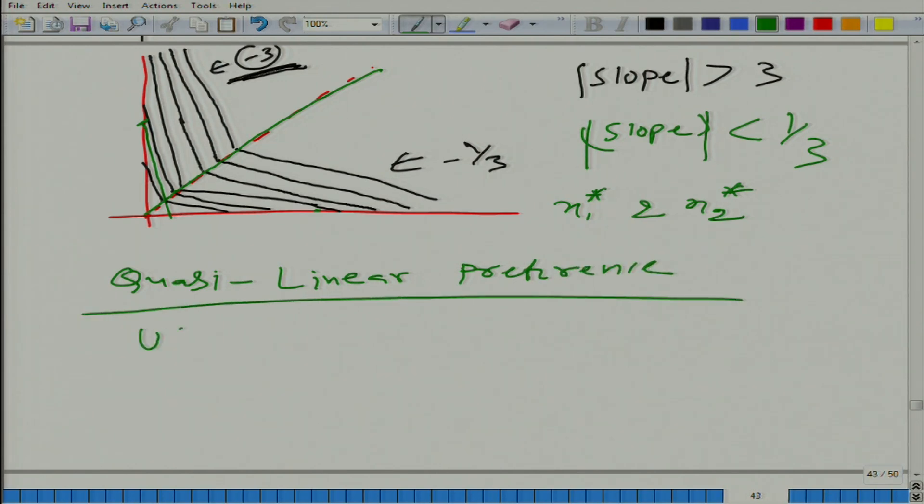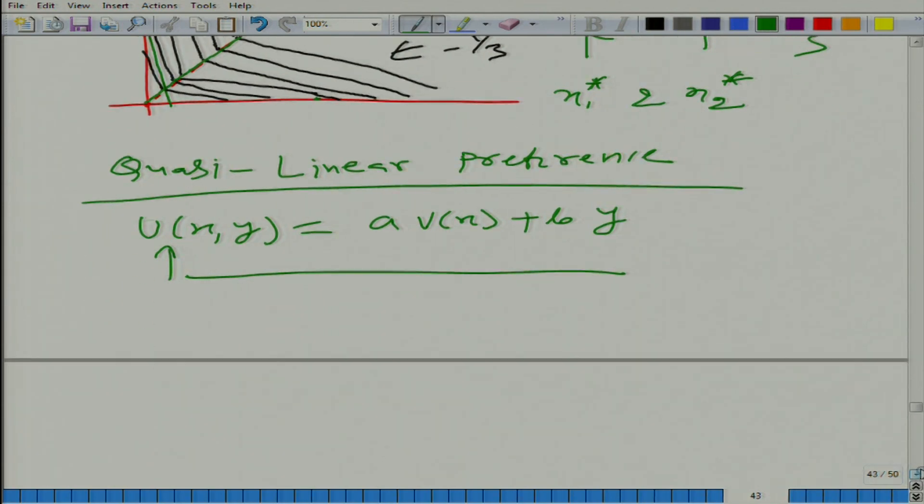Let us say in a two-good world, preference is called quasi-linear if the utility function representing this preference can be written as v(x) plus b*y. What it means is that the utility function is linear in one of the arguments and not linear in the other argument. Then we say the utility function represents quasi-linear preference. Is it clear?